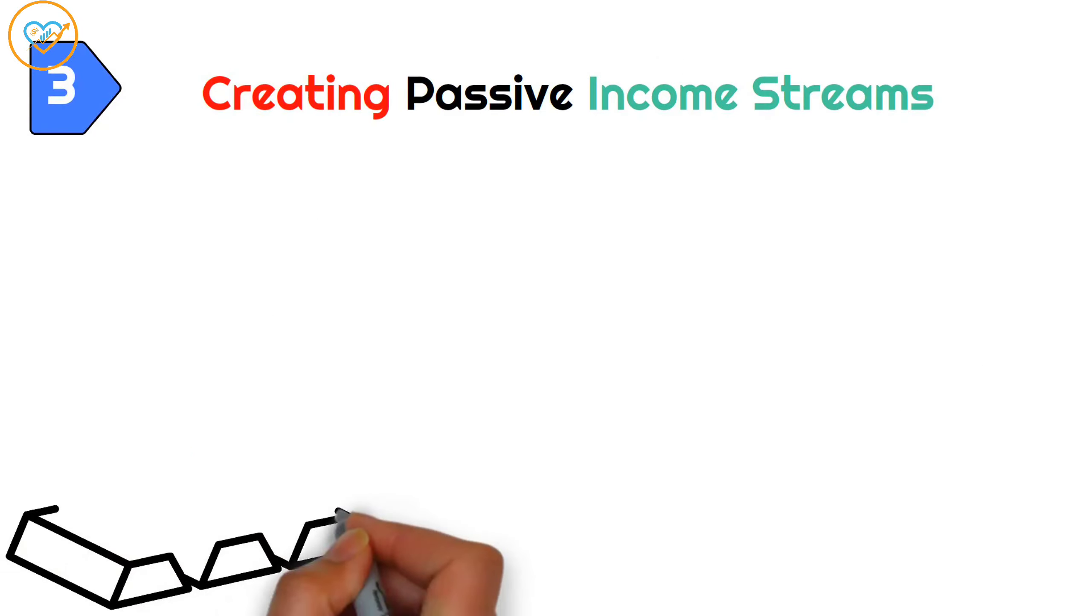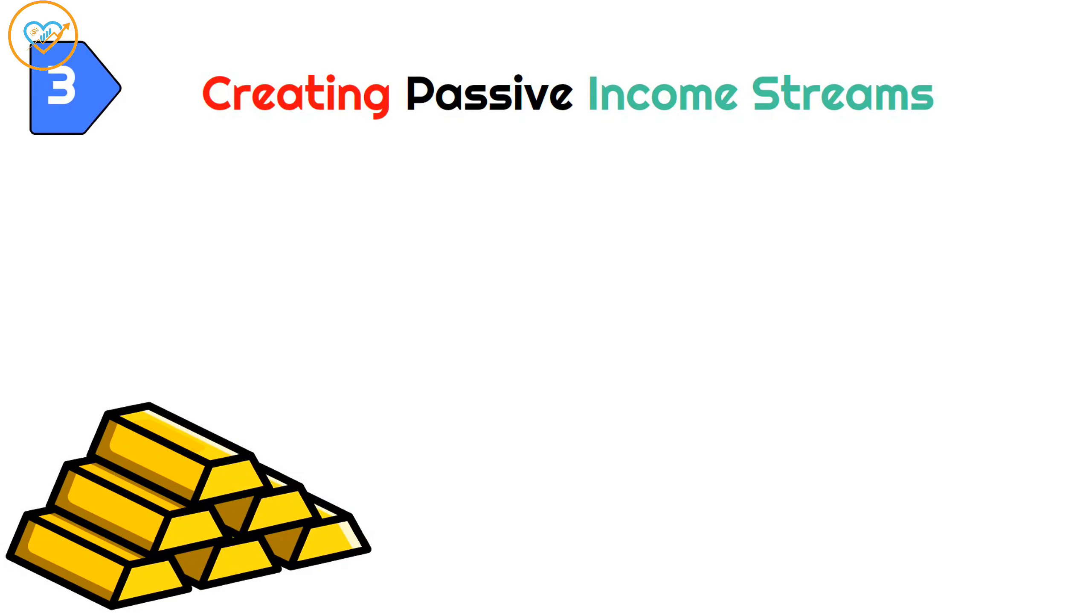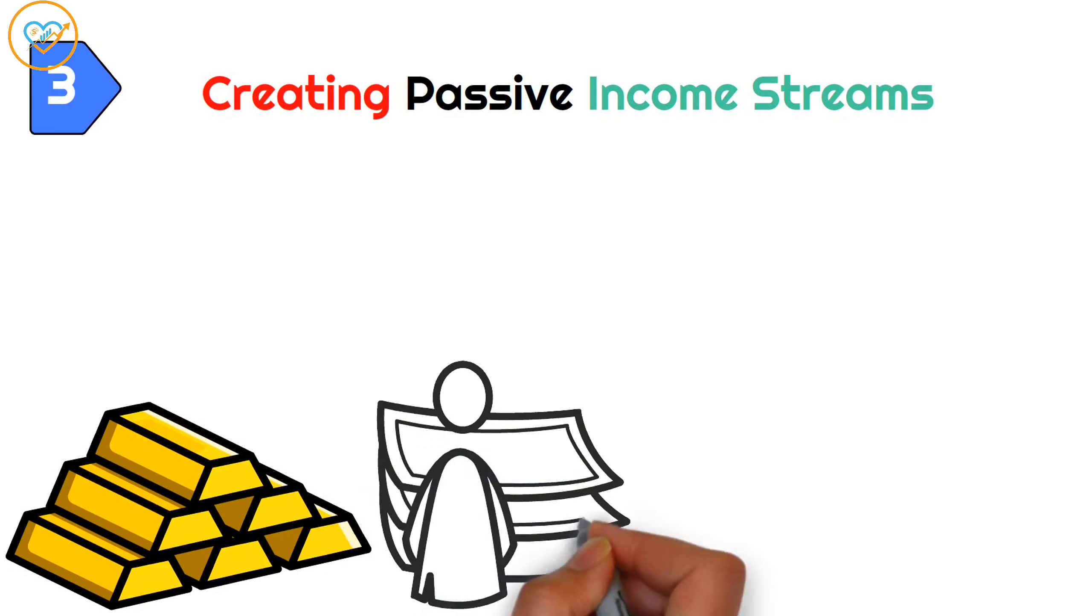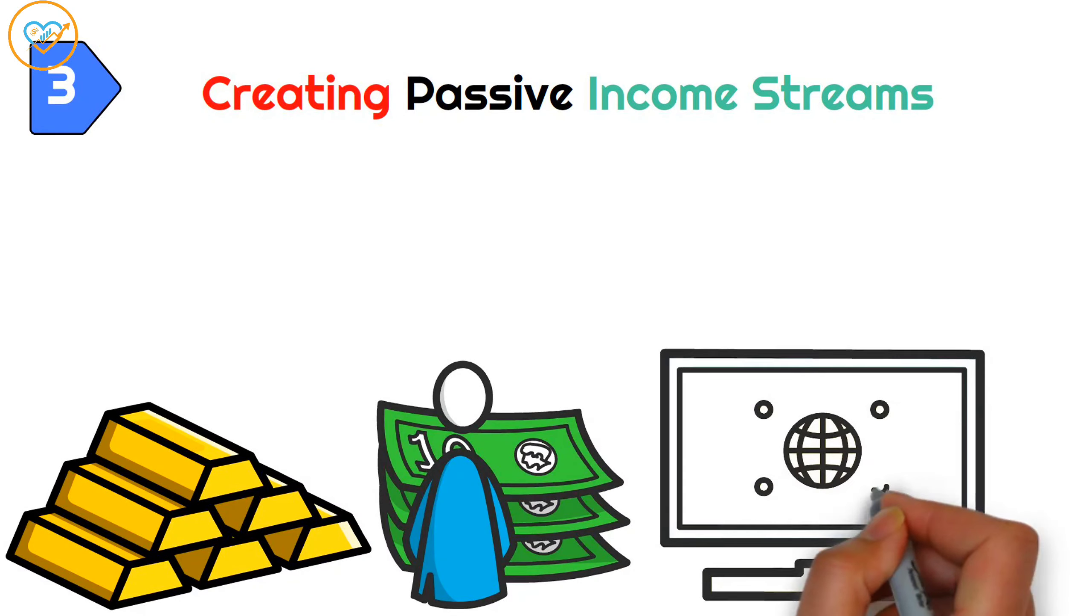Number 3. Creating passive income streams. When it comes to building wealth, having different income streams should be taken as something very important. With just $1,000, you have the opportunity to venture into creating passive income sources. In today's digital age, the internet has opened up countless avenues for generating additional income.